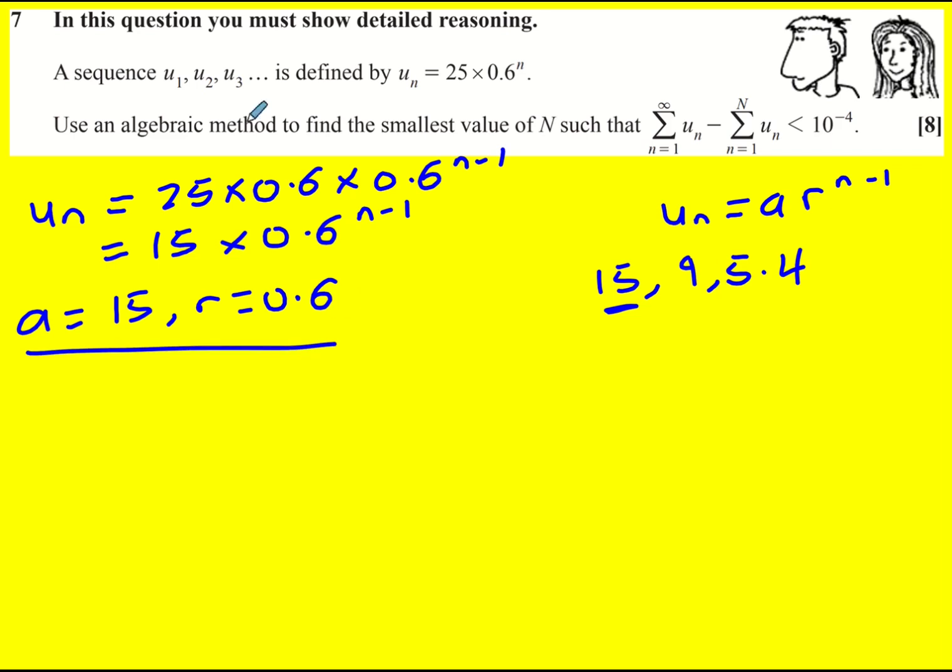Right, we're then asked to use an algebraic method to find the smallest value of n such that this is true. Now this is actually the sum to infinity of all the terms of un, whereas this one is s capital n. I'm just going to sum it up to some value and I want it to be such that the difference is less than 10 to the minus 4.